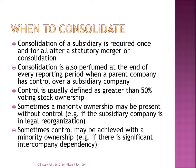Control is presumed to be present when a parent company owns greater than 50% of the outstanding stock of its subsidiary. Do be aware, though, that it is possible that a majority ownership may be present without control — for example, if the subsidiary company were in legal reorganisation. In this case, the investee company would be an unconsolidated subsidiary and the only evidence of its relation to the investor company would be the investment account on the investor's balance sheet. Do also be aware that control may alternatively be achieved with a minority ownership, for example if there is significant intercompany dependency.